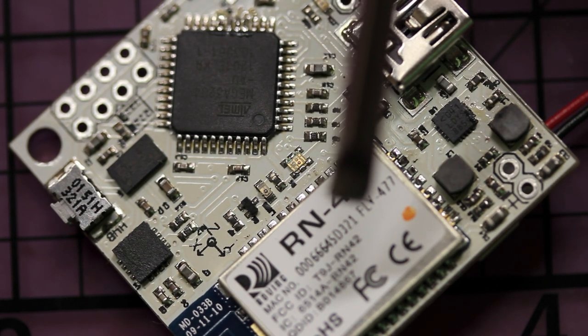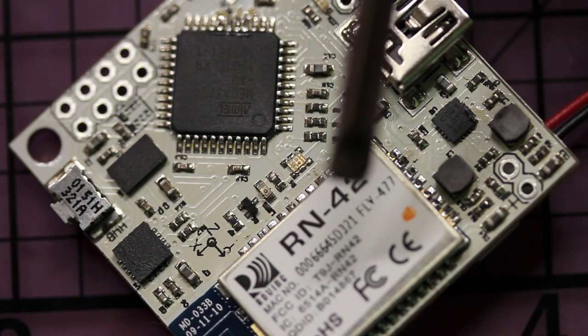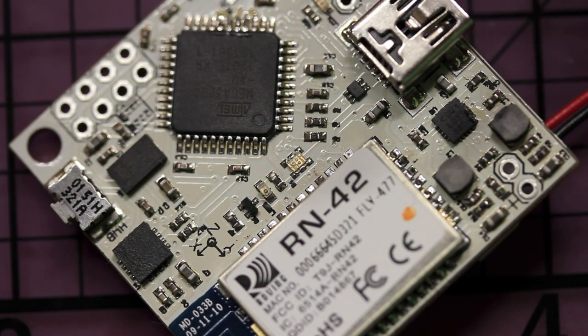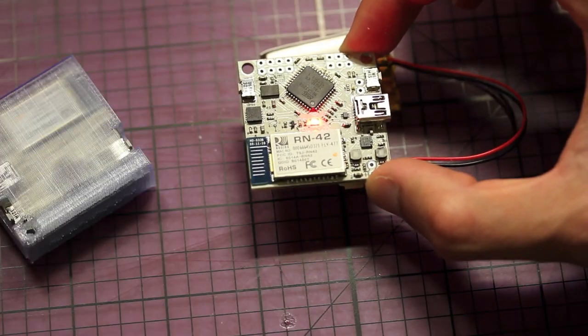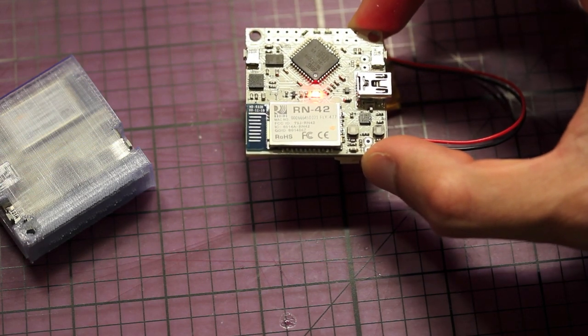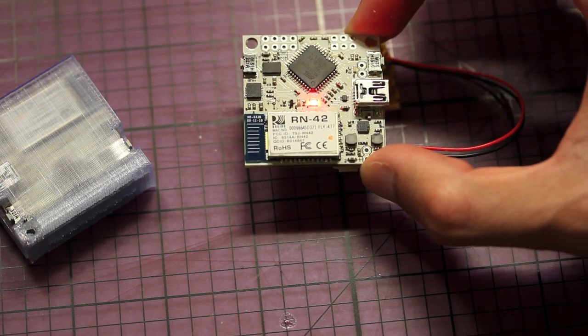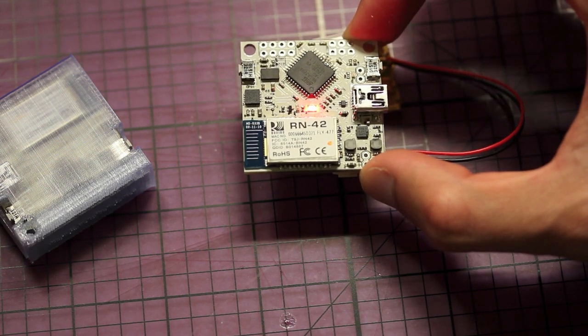The Roving Networks RN-42 Bluetooth module allows us to connect wirelessly to a computer. Tracker uses an orientation filter from Sebastian Madgwick that takes the raw data from the magnetometer, the gyroscope, and the accelerometer.